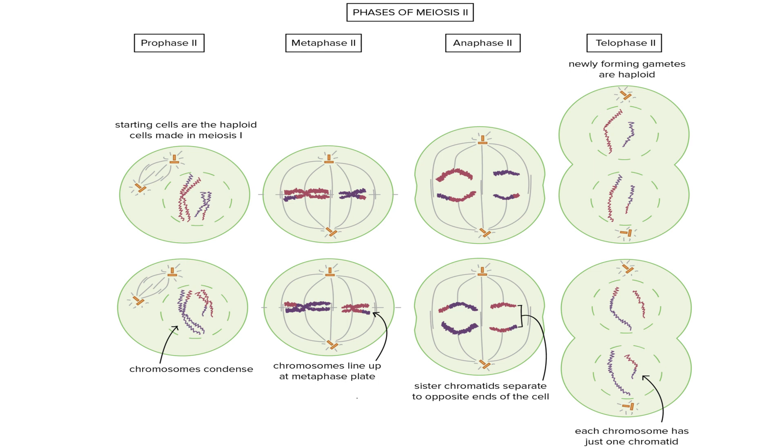The first step in meiosis two is prophase two. The nucleus is going to dissolve and the spindle fibers will form. In metaphase two, the chromosomes are going to line up at the cell's equator. In anaphase two, the chromosomes are going to split up. The chromatids are going to be pulled to opposite ends of the cell.